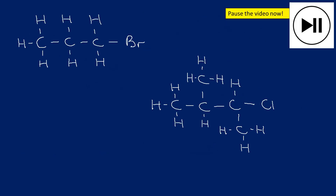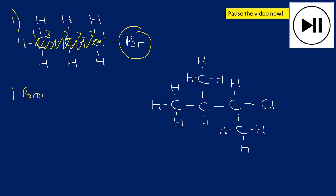Here are a couple of practice questions more realistic for your exam — pause the video and try them yourself. The first one has a three-carbon chain with only a bromo group. Numbering gives either 1,2,3 or 1,2,3 in reverse, so the answer is 1-bromopropane.